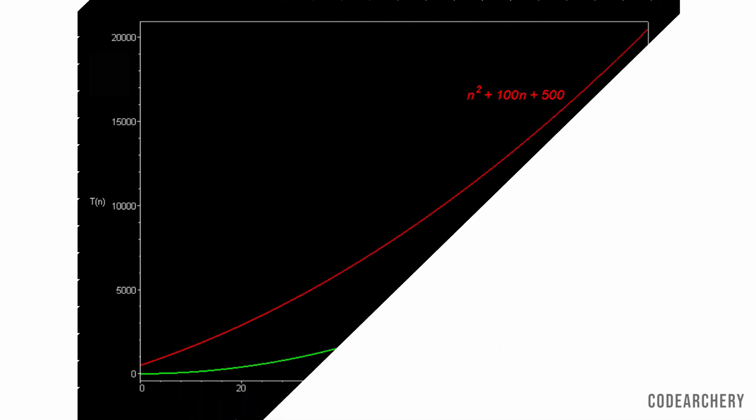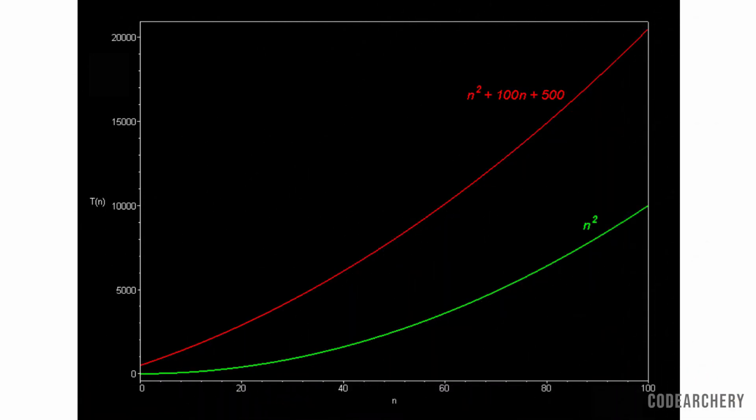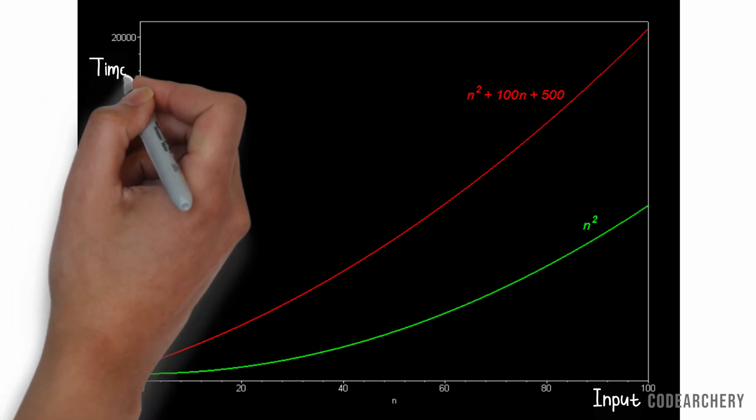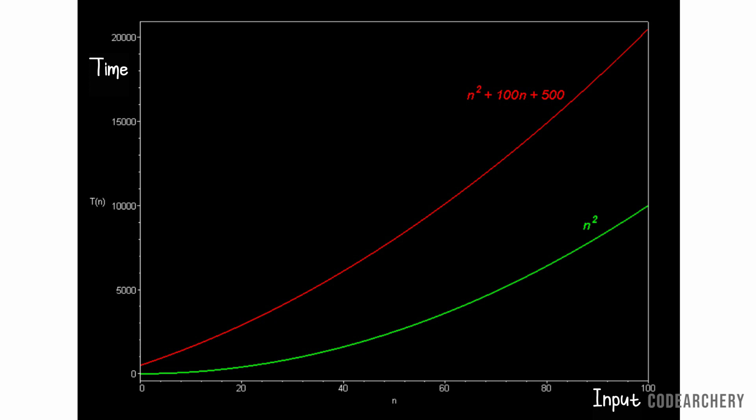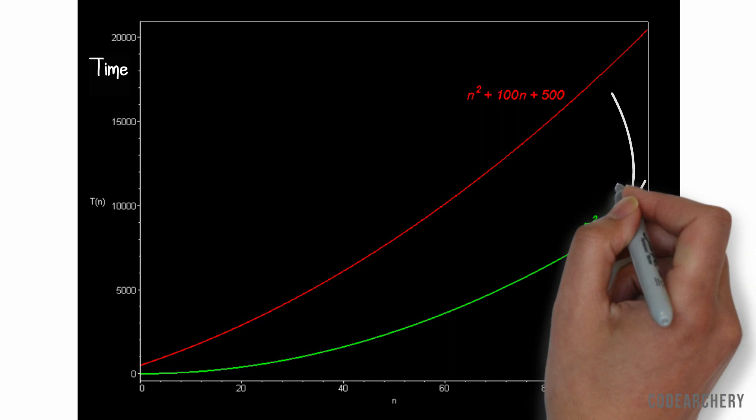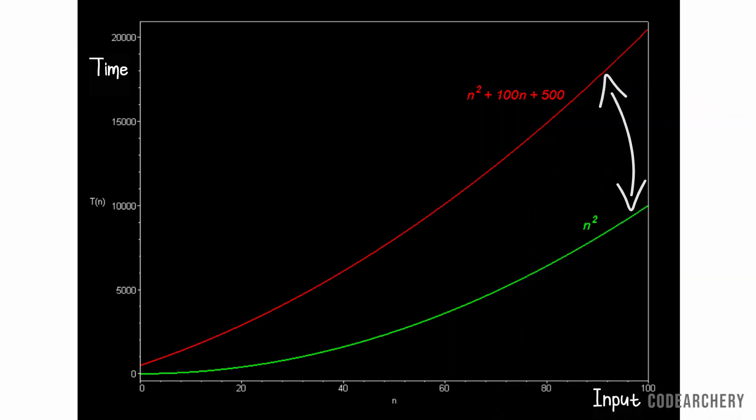Let's understand this point in more detail. Suppose we have two functions: n square plus 100n plus 500 and n square. So according to rule 1, time complexity of both these functions is n square. Now, we'll plot a graph of these two functions. On x axis, we represent the number of input values and on y axis, we represent the time. Now, as you can observe in the graph, you might say that these two graphs are different than each other. However, they have a huge gap. Their behavior is completely different.